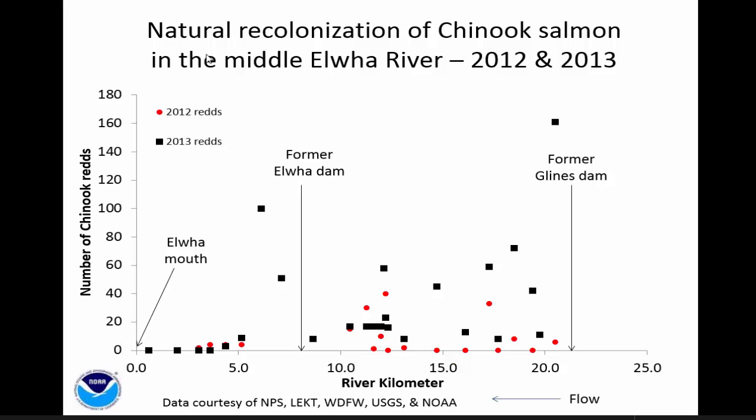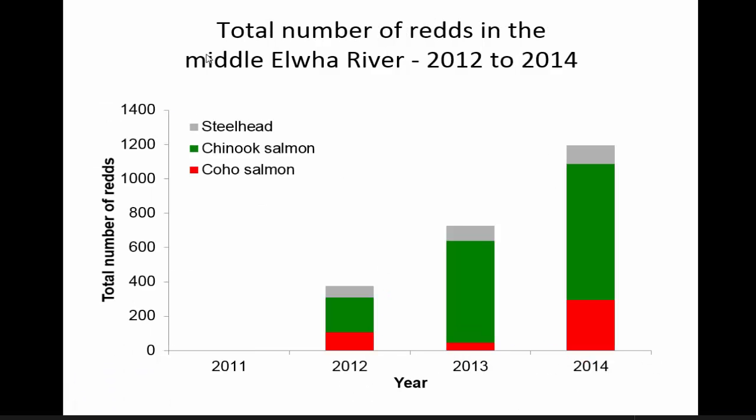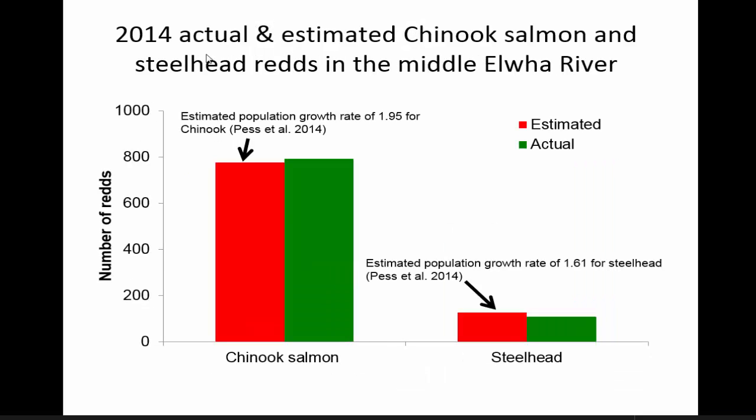Population levels for Chinook have rebounded, not necessarily due to dam removal — it was somewhat fortuitous with good ocean conditions, and the number of fish returning were the highest we've seen in about 20 years. Where the typical average was around 2,000, the last two years we've seen around 4,000. This gives you an idea of how the number of nests have increased over time in the middle river by species, going from zero in 2011 to about 1,400 this last year. We made predictions before dam removal based on other recolonization events, and so far it's been pretty good.